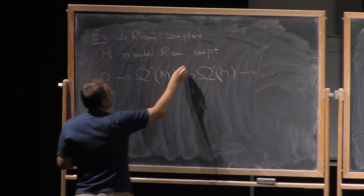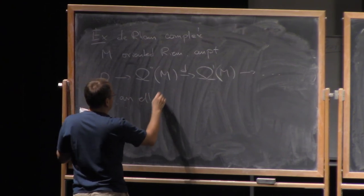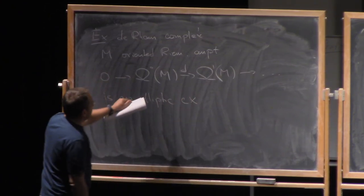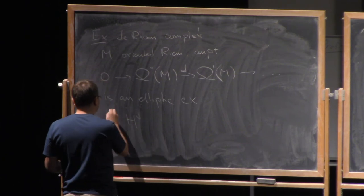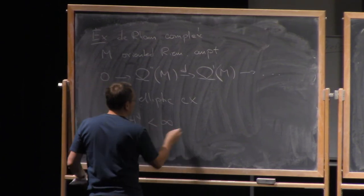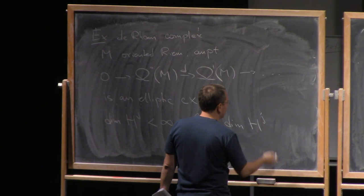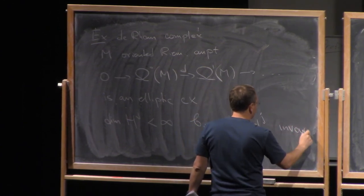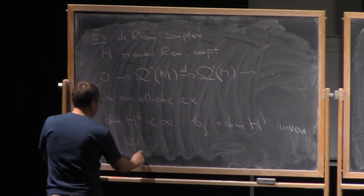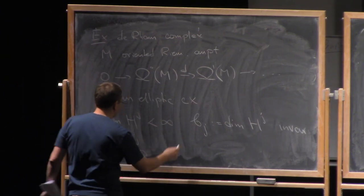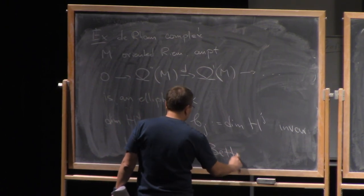Now, what we know is that this is an elliptic complex. And so by what we have done so far, we know that the chase cohomology group of this complex is finite dimensional, right? And as we have defined, Bj is the dimension of the chase cohomology group. This is our invariant. Of course, we know that this complex of the cohomology groups here, Hj, are just de Rham cohomology groups. And Bj is just the chase number.